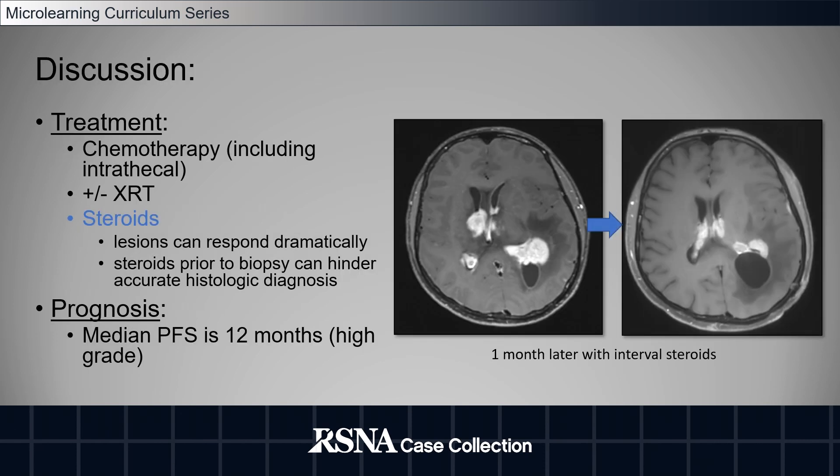Treatment for CNS lymphoma involves chemotherapy, including intrathecal chemotherapy, radiation, and steroids. Lymphoma can respond dramatically to steroids, as seen in these images showing a dramatic decrease in size of these enhancing masses over a one-month interval following steroid administration.